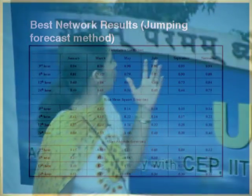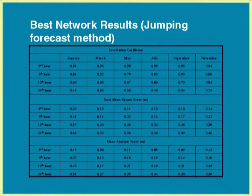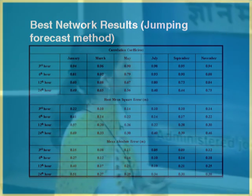The model has four inputs — the previous 3rd, 6th, 12th, and 24th hour values — and the output is one value, either the 12th or 24th hour. I have named this the jumping forecast method. These are the results with various error measures of correlation coefficient, root mean square error, and mean absolute error.